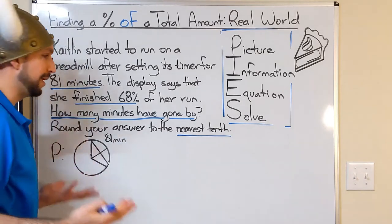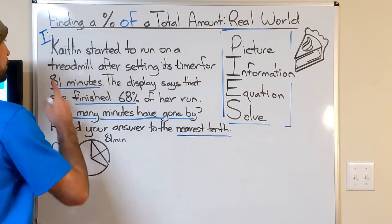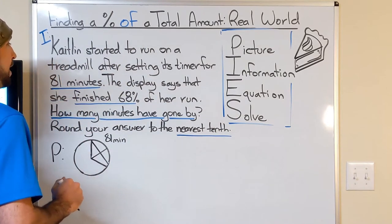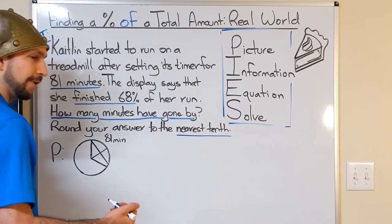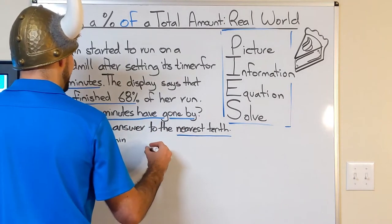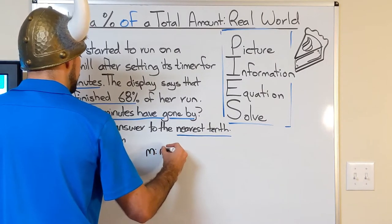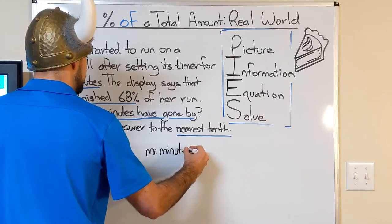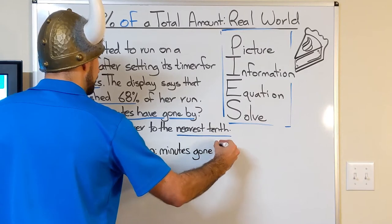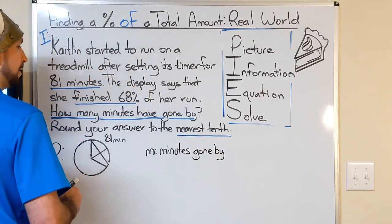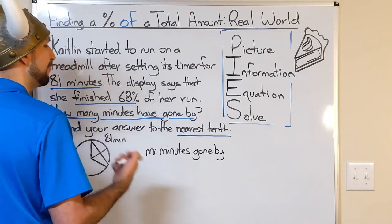Next, I'm going to finally write an equation. So the total was 81 minutes. I want to know how many minutes have gone by, so let's define our variables. Well, we really only need to know one. So let's call M minutes gone by.